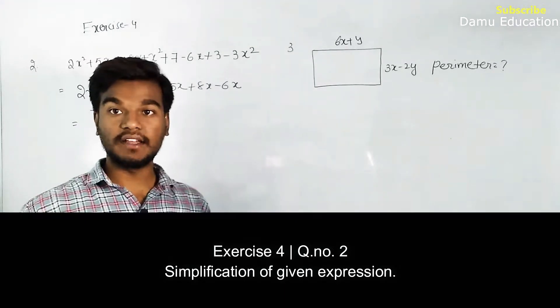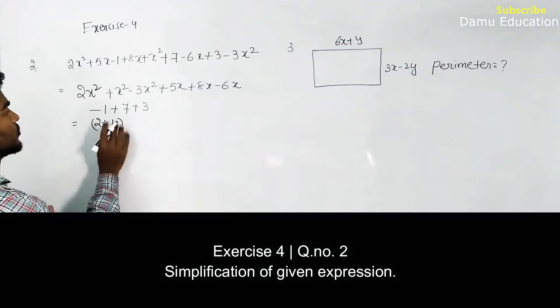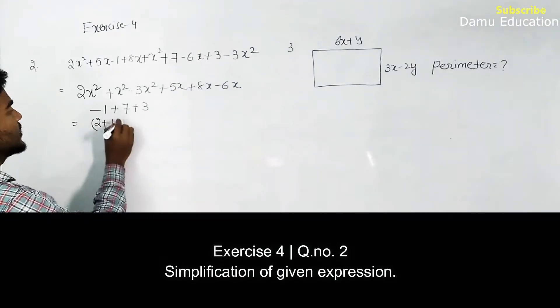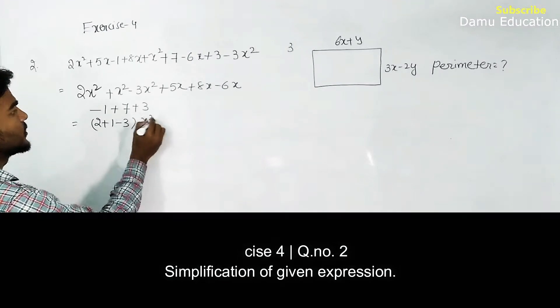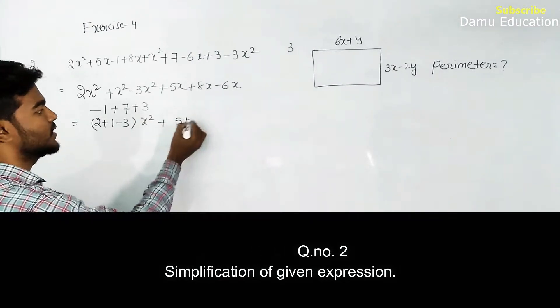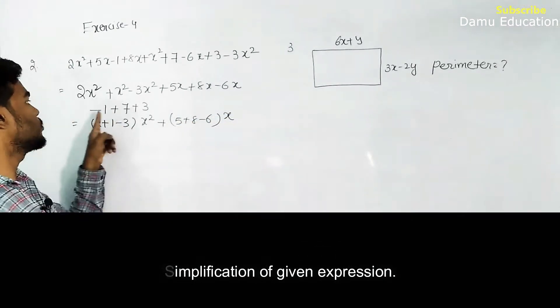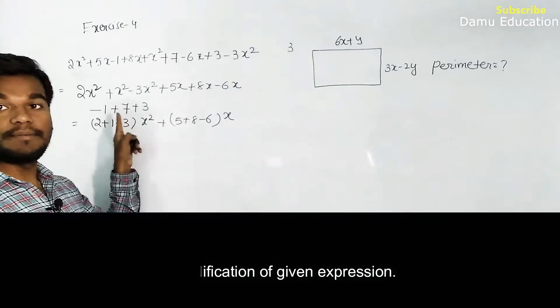Take common of x². So 2 plus 1 minus 3 into x² plus, take common of x, 5 plus 8 minus 6 into x, and minus 1 plus 7 plus 3 will become plus 10.